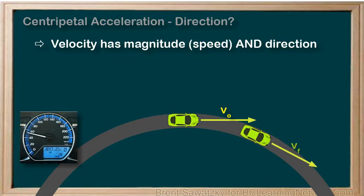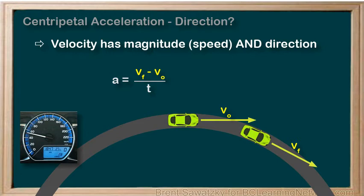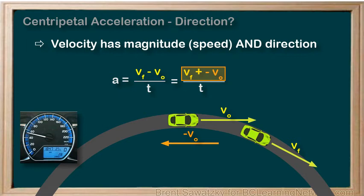Let's call this one vf. Since acceleration is the rate of change of velocity, we need to subtract the velocities, which will determine the direction of the change: vf minus v0. Recall that we can show a vector subtraction by switching the direction of v0 and changing our equation to vf plus the negative version of v0. So to determine the acceleration, we can simply add these two vectors and get our delta v.